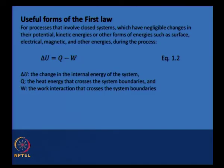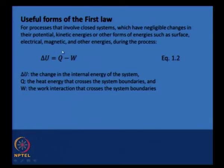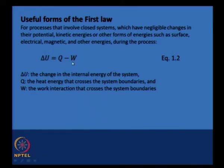The useful form of the first law for us is when it is applied to a closed system. For a closed system, when there are negligible changes in other kinds of energies such as potential energies, kinetic energies, surface energies, magnetic energies, and so on, then you can relate the change in the internal energy ΔU to the heat interaction and the work interaction across the system boundaries. ΔU equals q minus w is a useful statement of the first law. Q and w are the energy interactions across the system boundaries; what happens inside is related to what crosses the system boundaries.